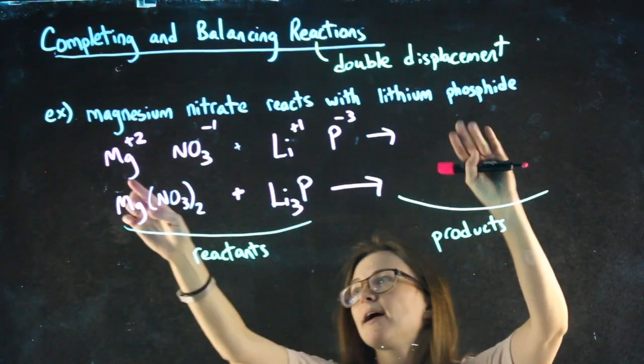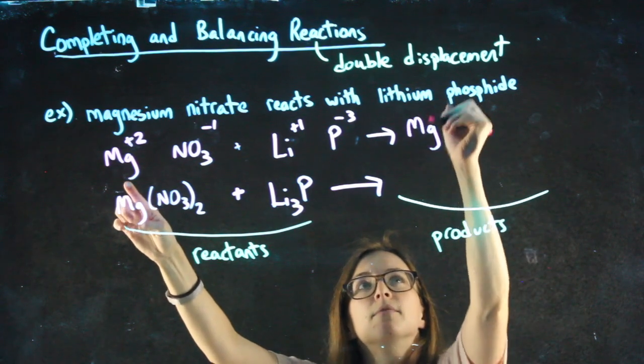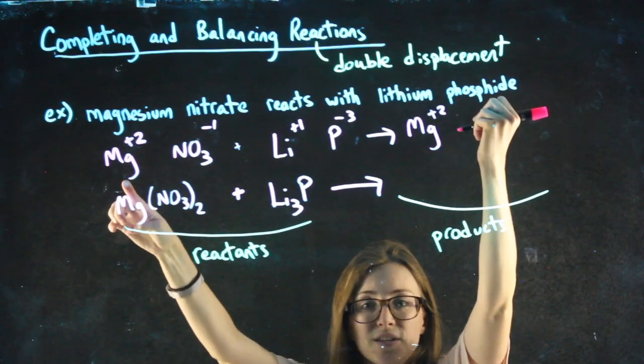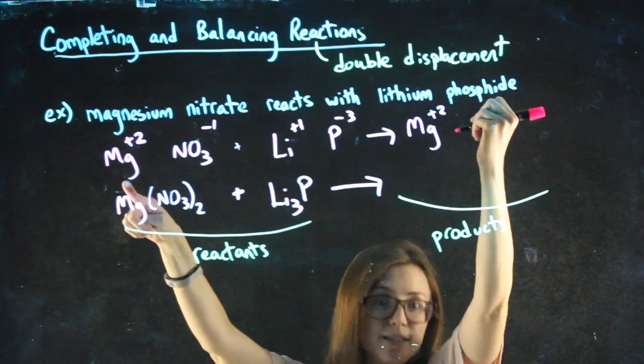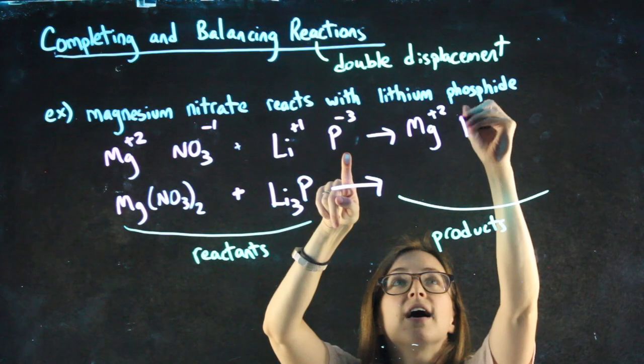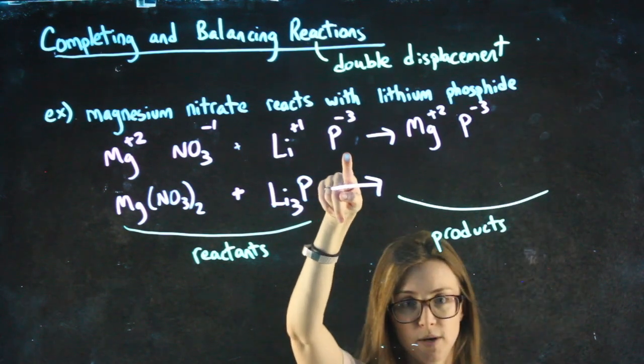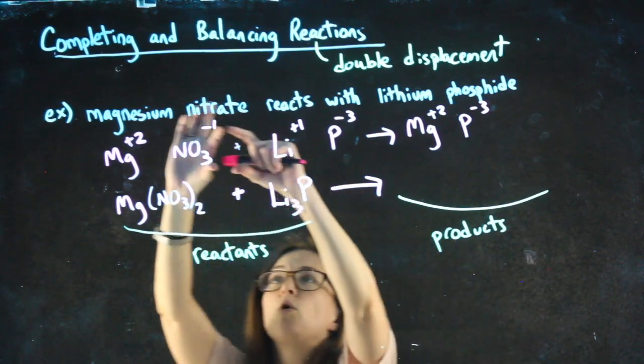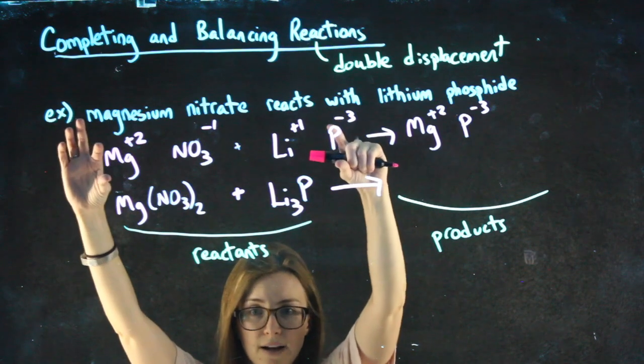Another way is just, I still have magnesium, but it needs to bond with someone new, and that someone needs to be negative. It's already bonded to nitrate on the left side, so phosphide is who it must bond with.